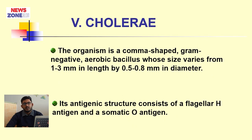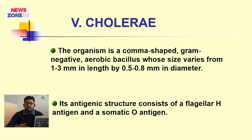What is Vibrio cholerae? The organism is a comma-shaped gram-negative aerobic bacillus whose size varies from 1 to 3 millimeters in length by 0.5 to 0.8 millimeters in diameter. Its antigenic structure consists of flagellar H antigen and somatic O antigen.